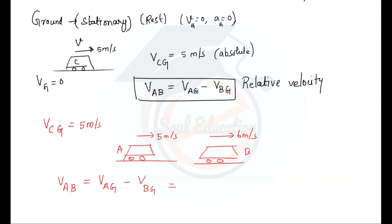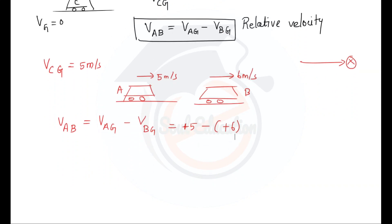So which is equal to 5 minus 6, which equals minus 1 meter per second. This is the velocity of car A with respect to B. Which means, with respect to B — which is the coordinate axis where the observer is located — car A appears to be moving backward.